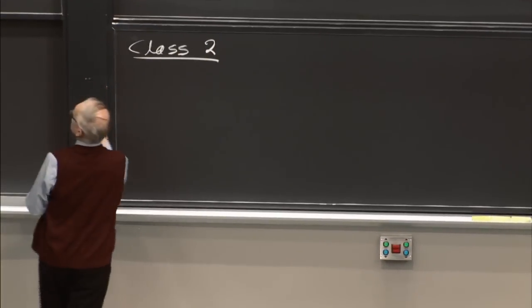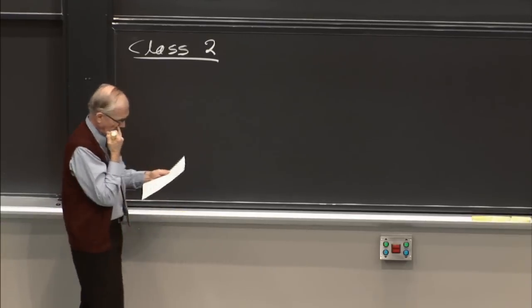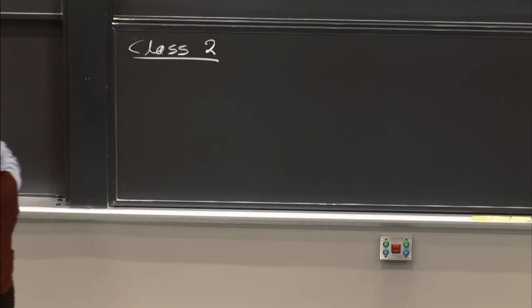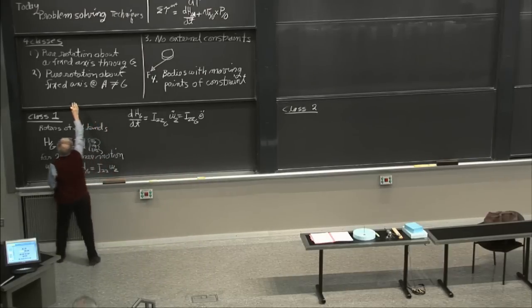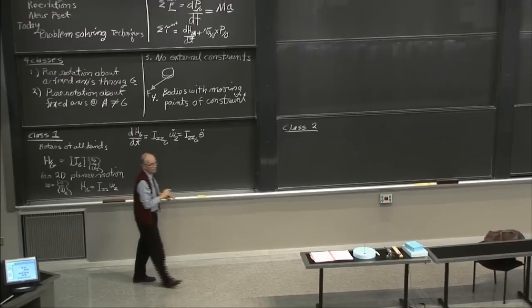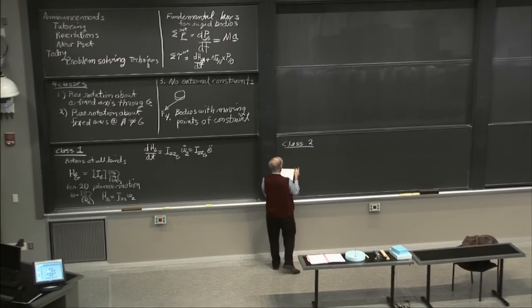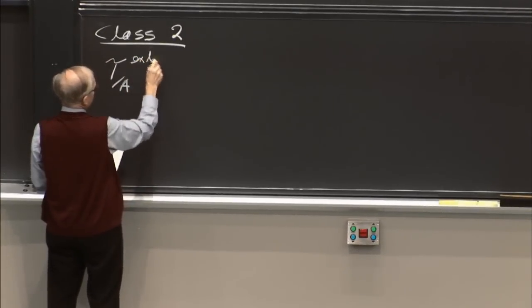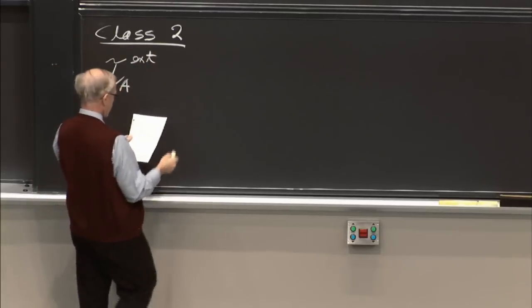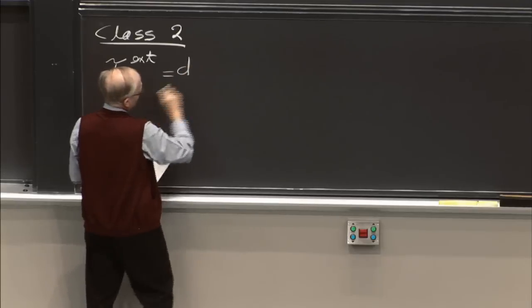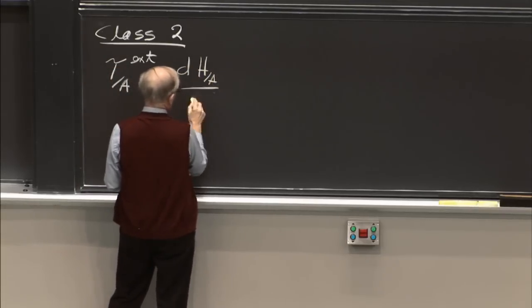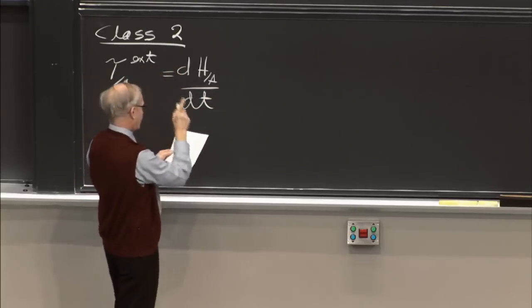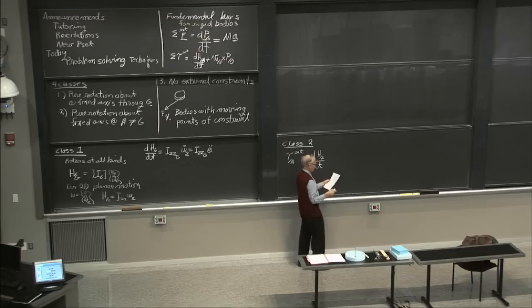Class two problems are pure rotation around some point that's not through G. The key here is a fixed axis at A — it's not moving, which is what makes these problems simpler. For these kinds of problems, you take the sum of the external torques with respect to A. Because that point is fixed, the second terms don't appear — the V cross P terms.